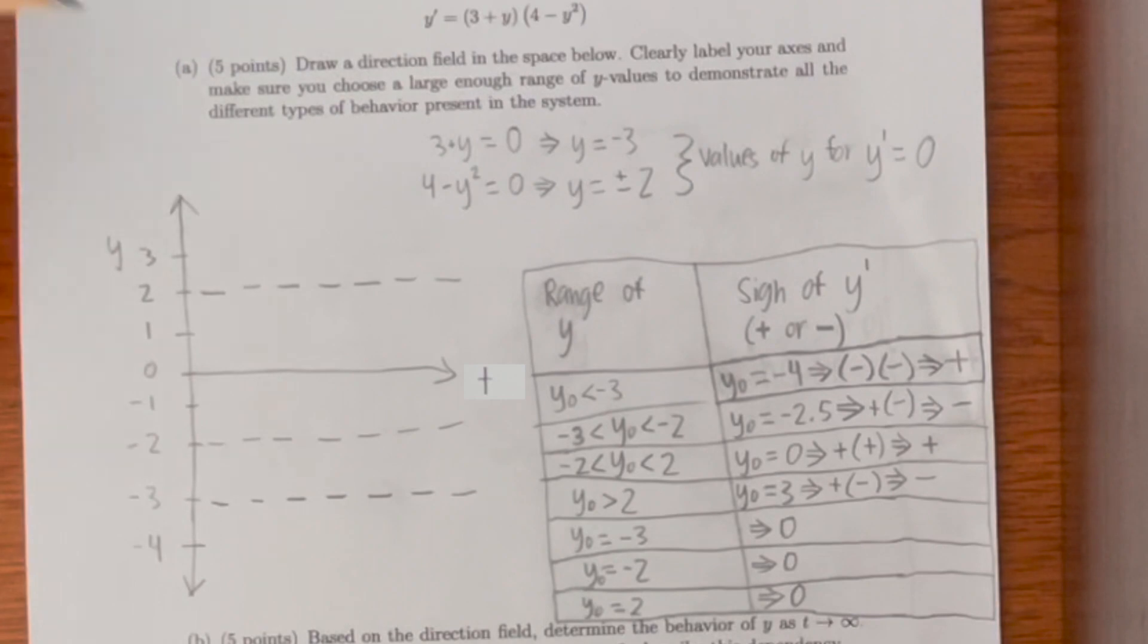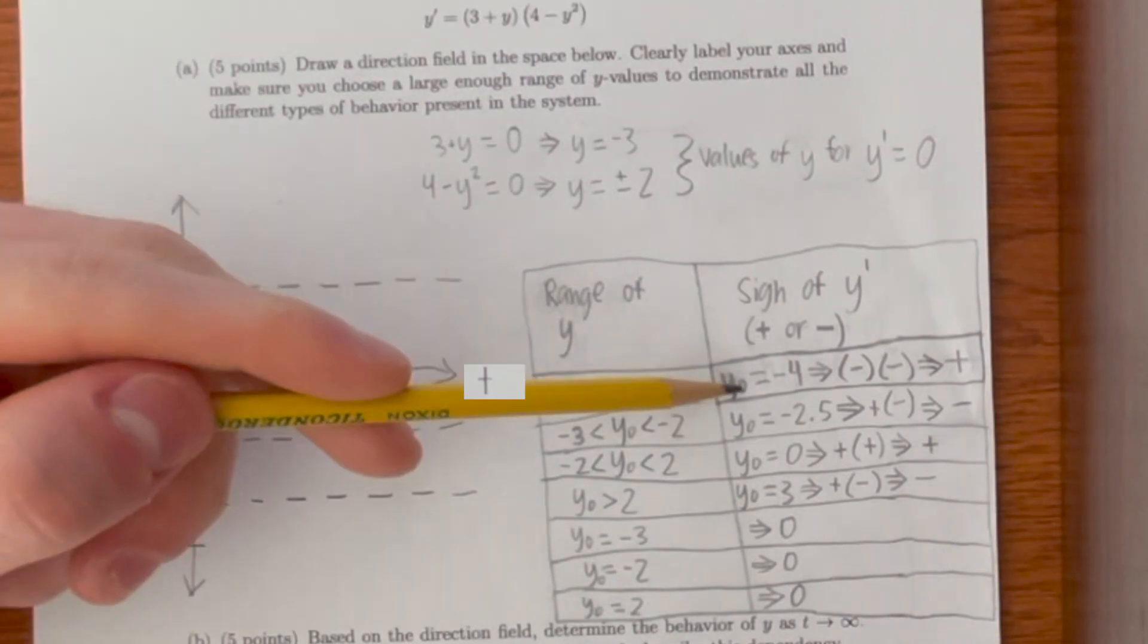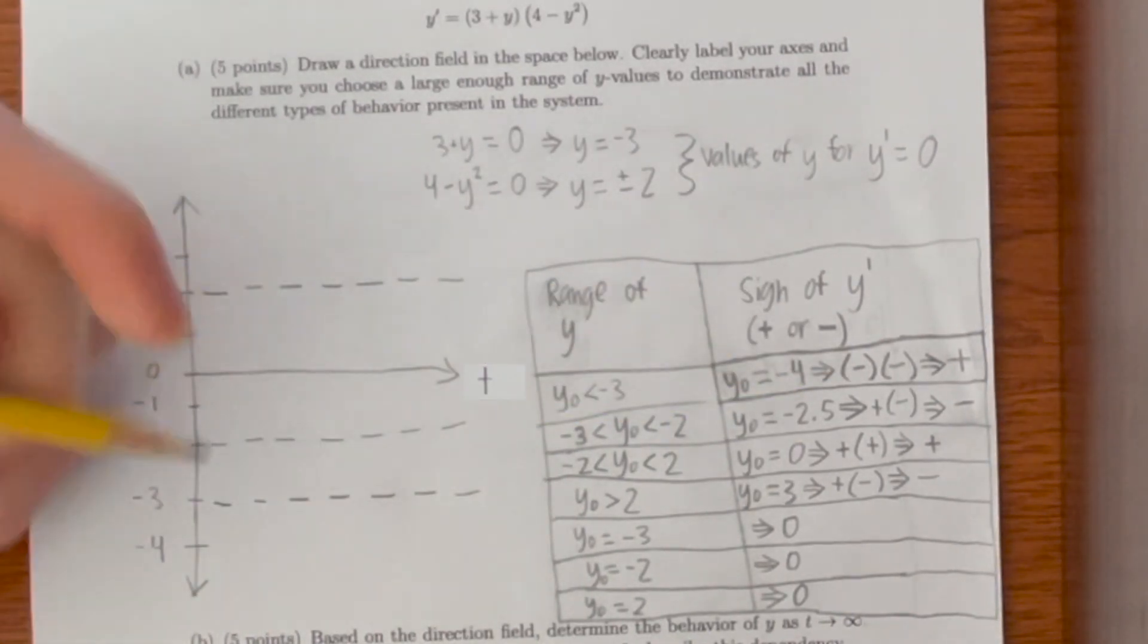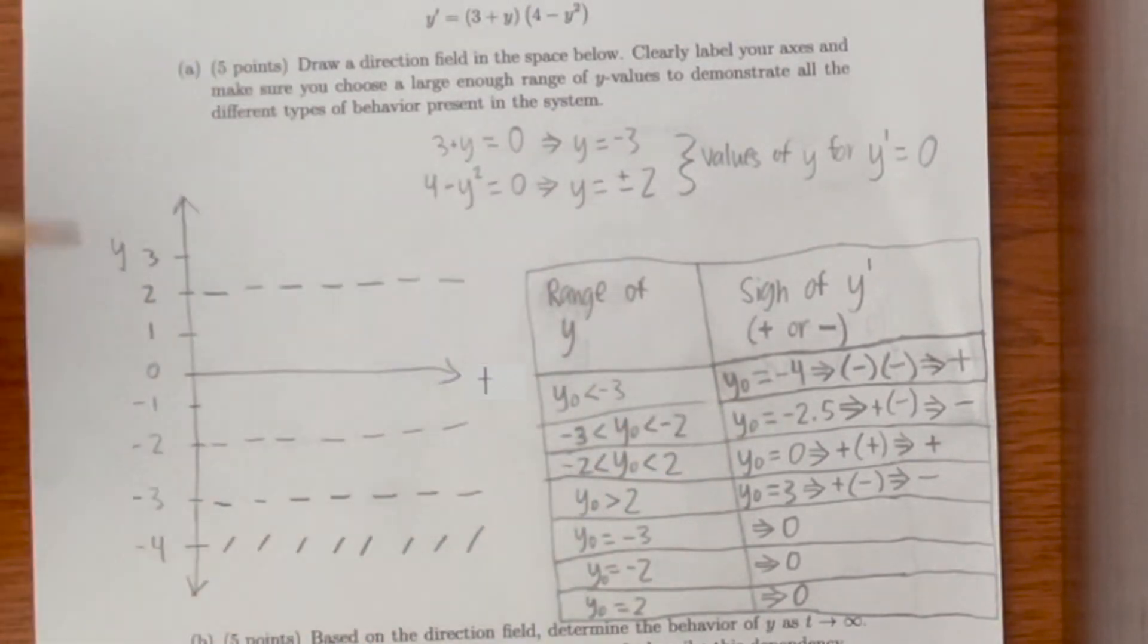So what I'm going to do is draw small positive ticks that look like a line with a slope of 1 at the points in the table in which y prime is positive, and small ticks pointing downwards with a slope that seems like negative 1 at the y prime values that were negative. At y naught equals negative 4 it's a positive slope. Why naught equals negative 2.5 it's a negative slope. Why naught equals 0 it's a positive slope. And why naught equals 3 it's a negative slope.